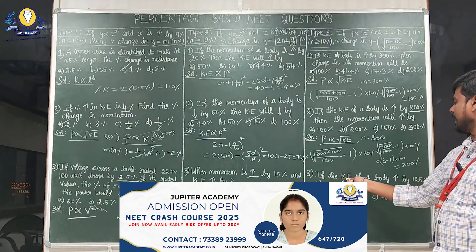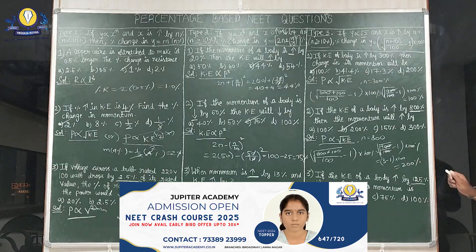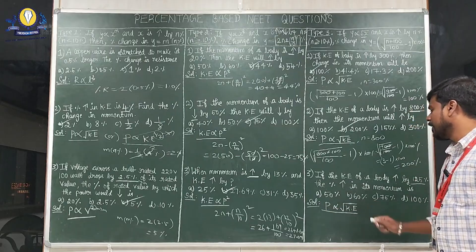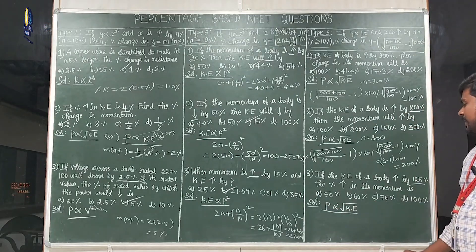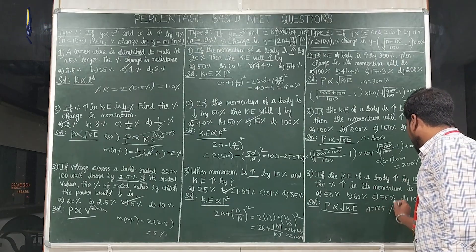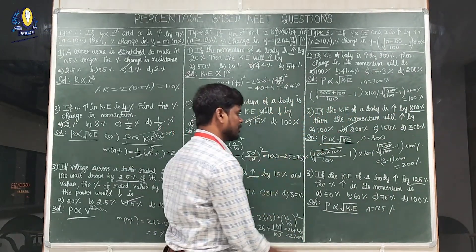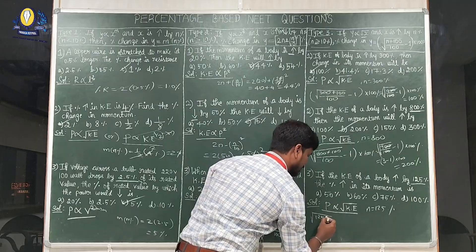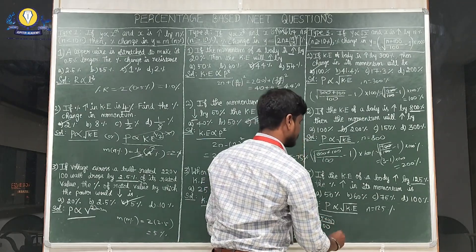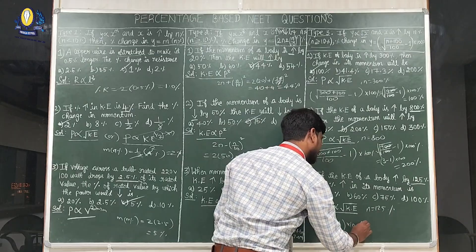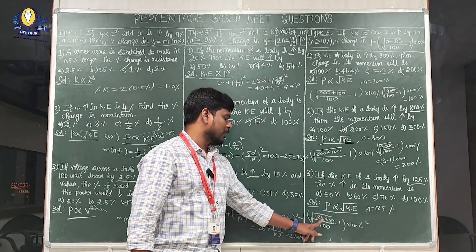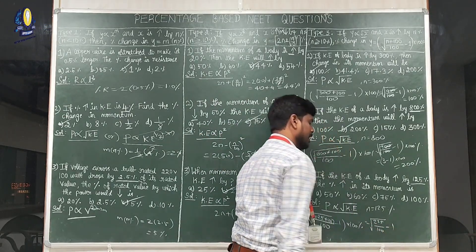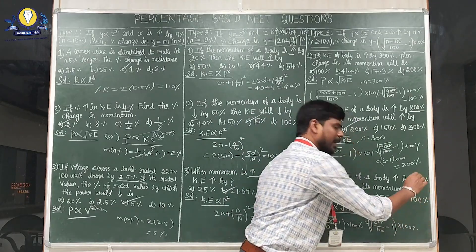Third case: if the kinetic energy of a body is increased by 125%, the percentage increase in its momentum is? Same formula p ∝ √KE, n = 125. Using the formula: [√((125+100)/100) − 1] × 100% = [√(225/100) − 1] × 100% = [15/10 − 1] × 100% = [0.5] × 100% = 50%.